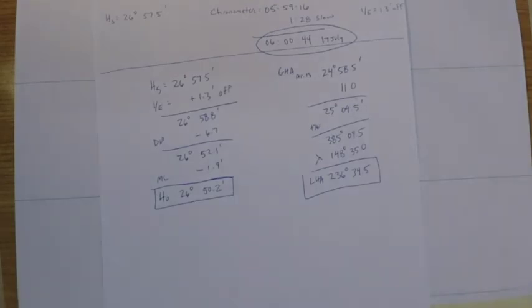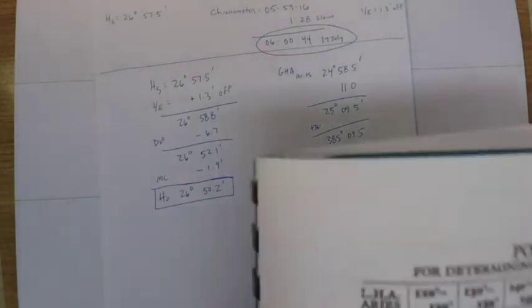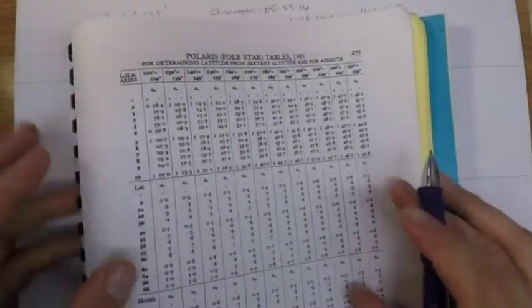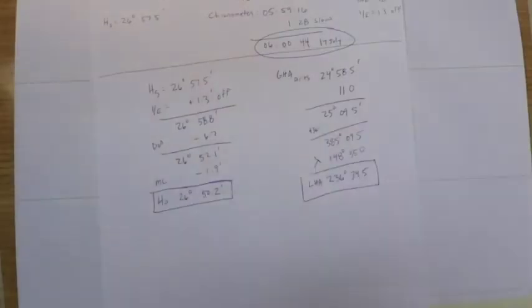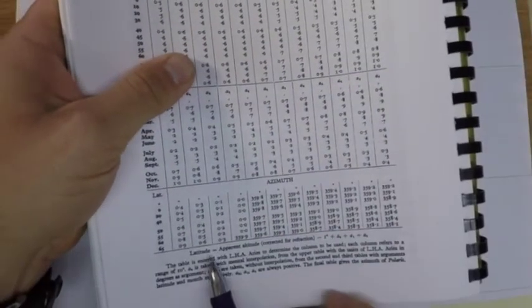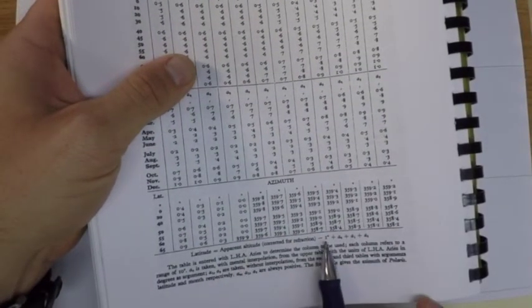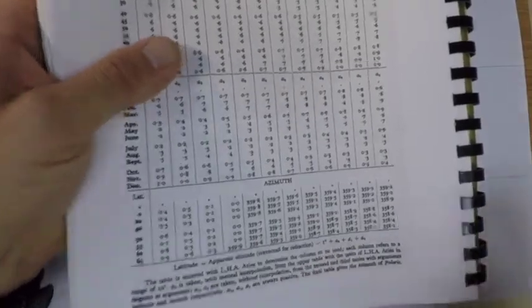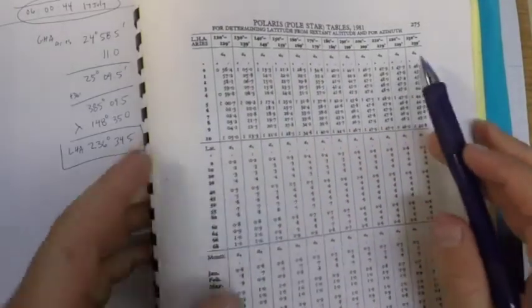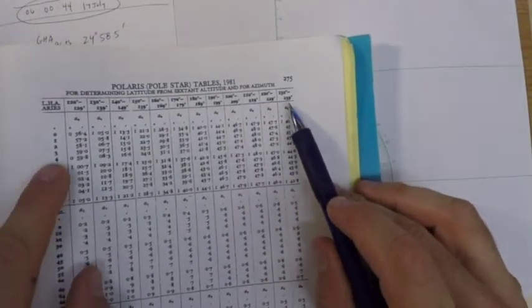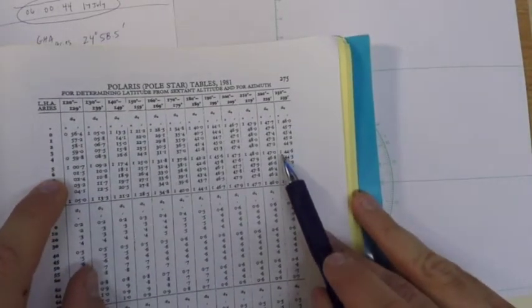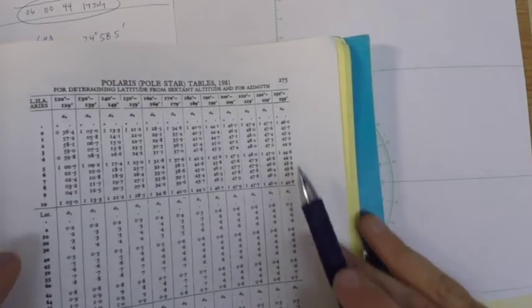It tells us down here the latitude is our apparent altitude minus one degree plus these three corrections. With the LHA of Aries being 236 and some change, down here I'll pull out this correction 1 degree 44.3, and then one for the latitude, one for the month, and then we'll have all of our corrections.